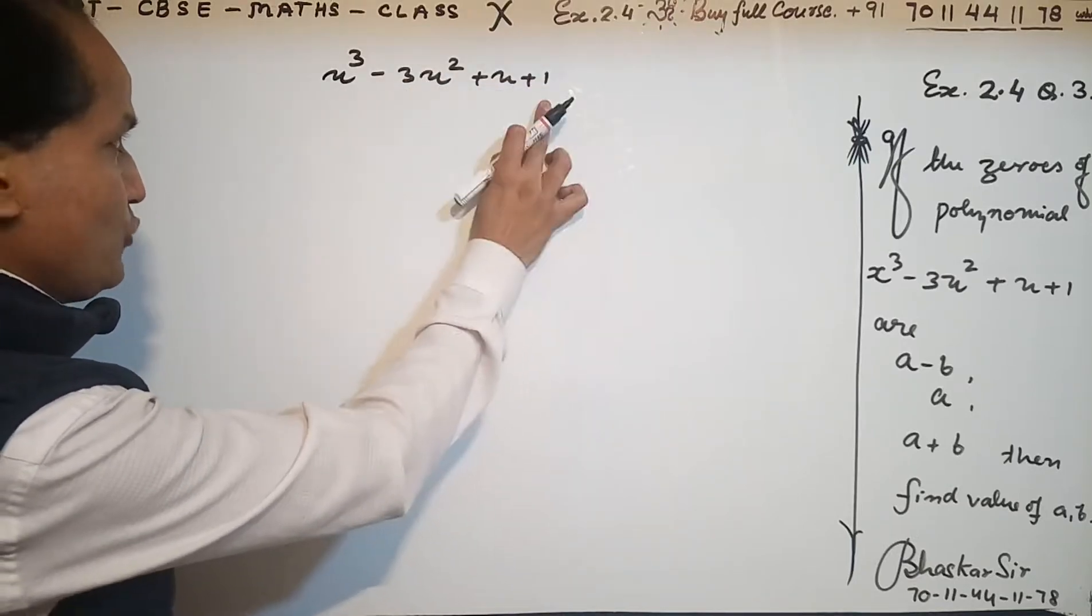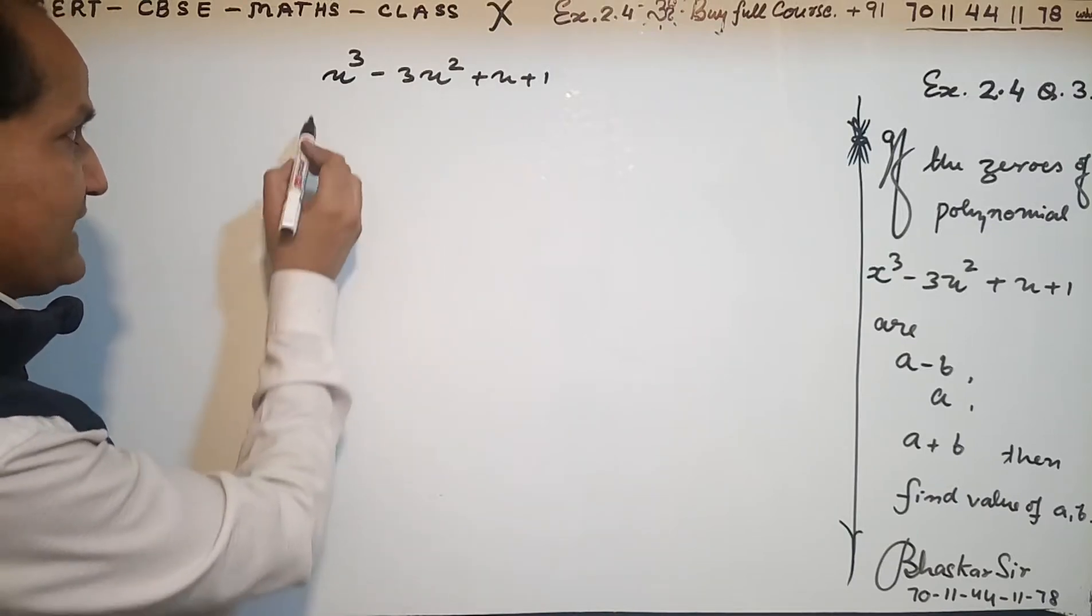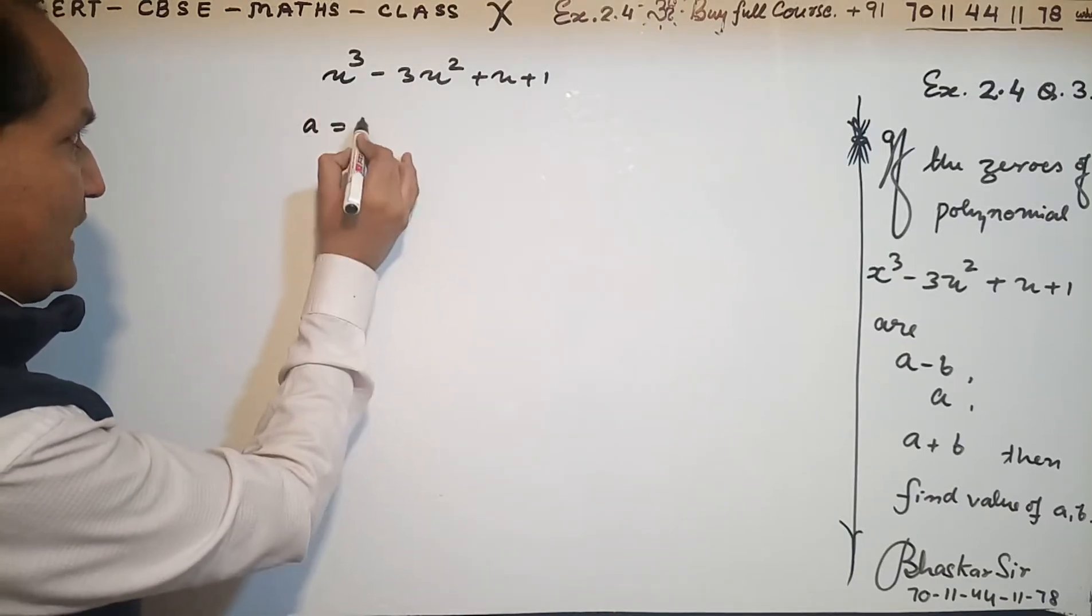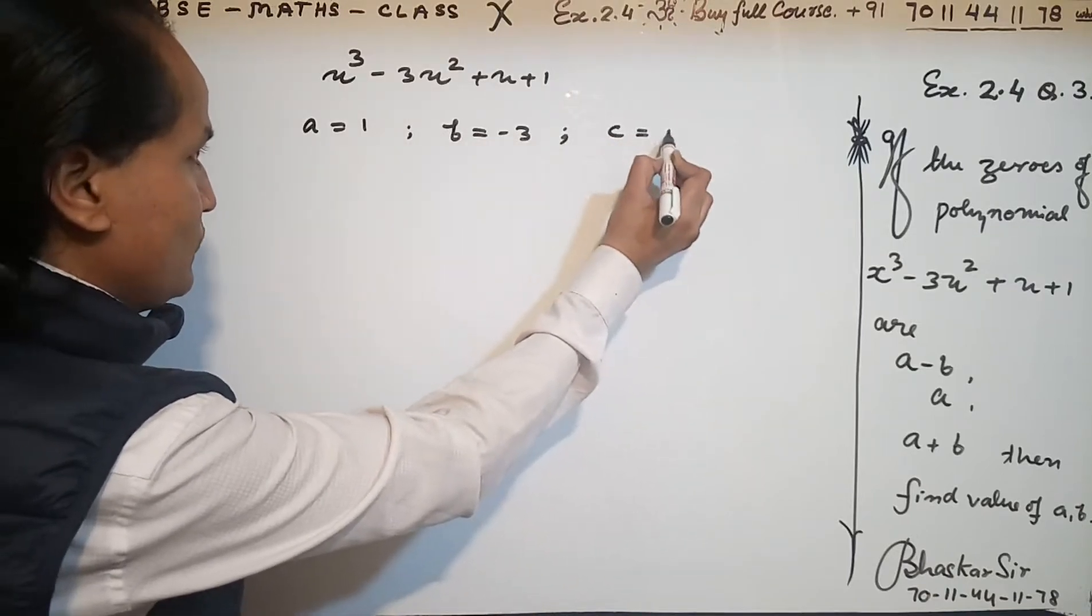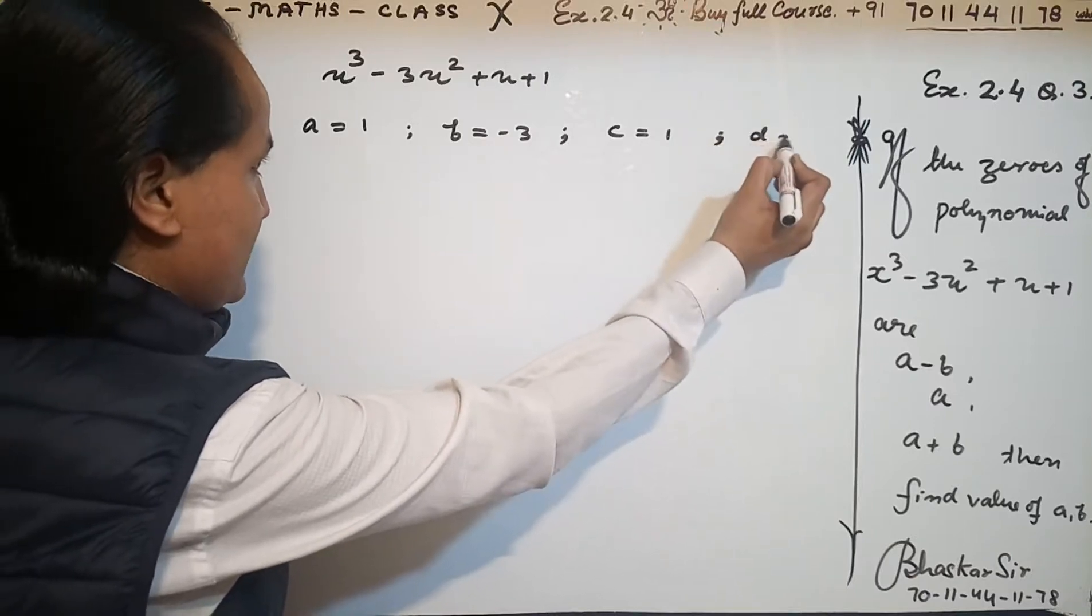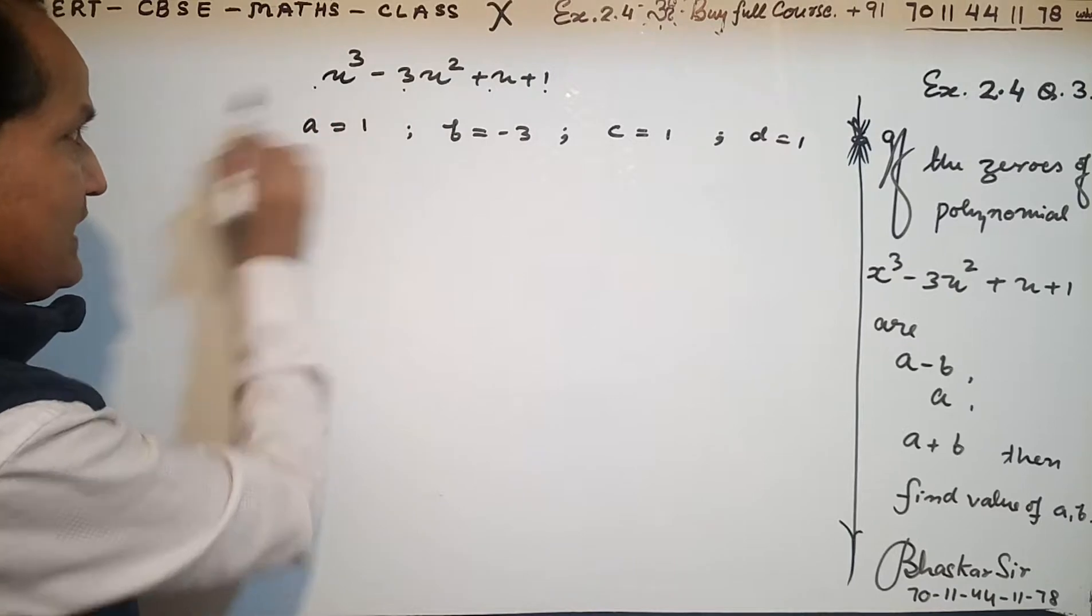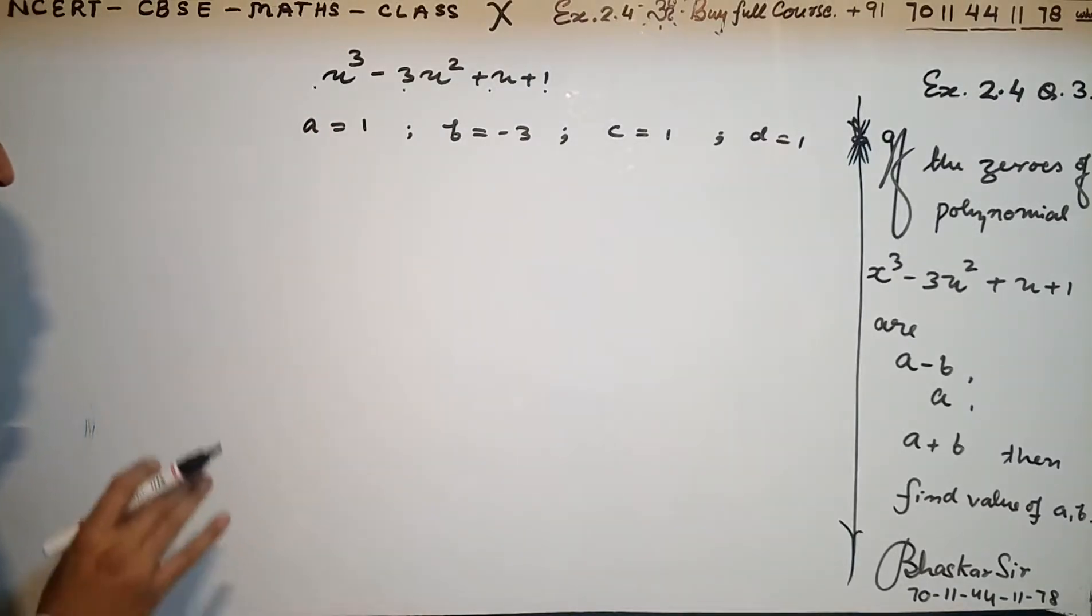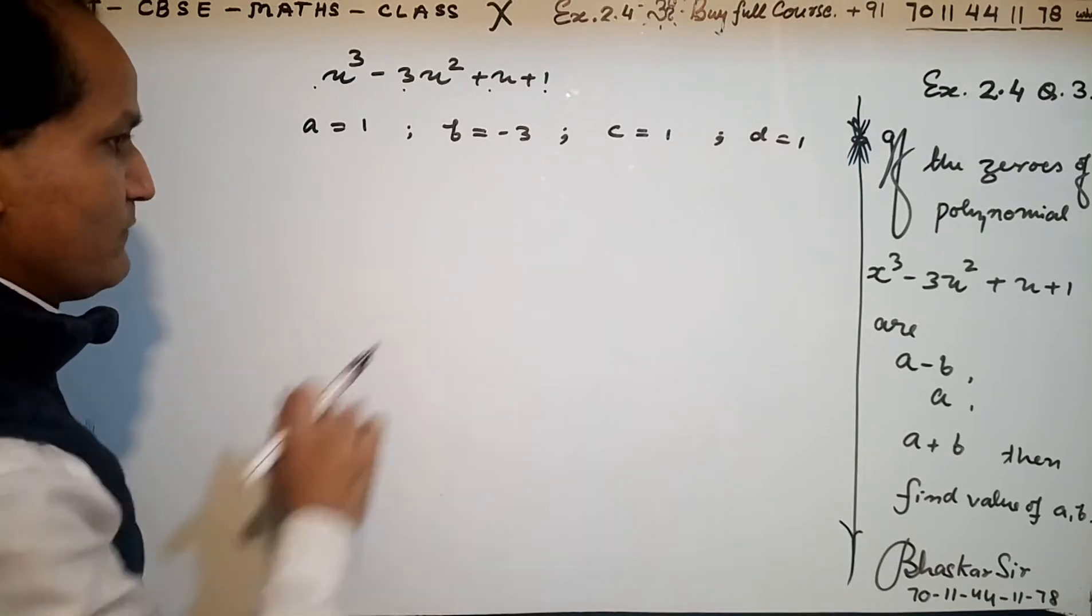From this cubic polynomial, I can easily find the coefficients: a = 1, b = -3, c = 1, and d = 1. I have all the coefficients of this cubic polynomial.